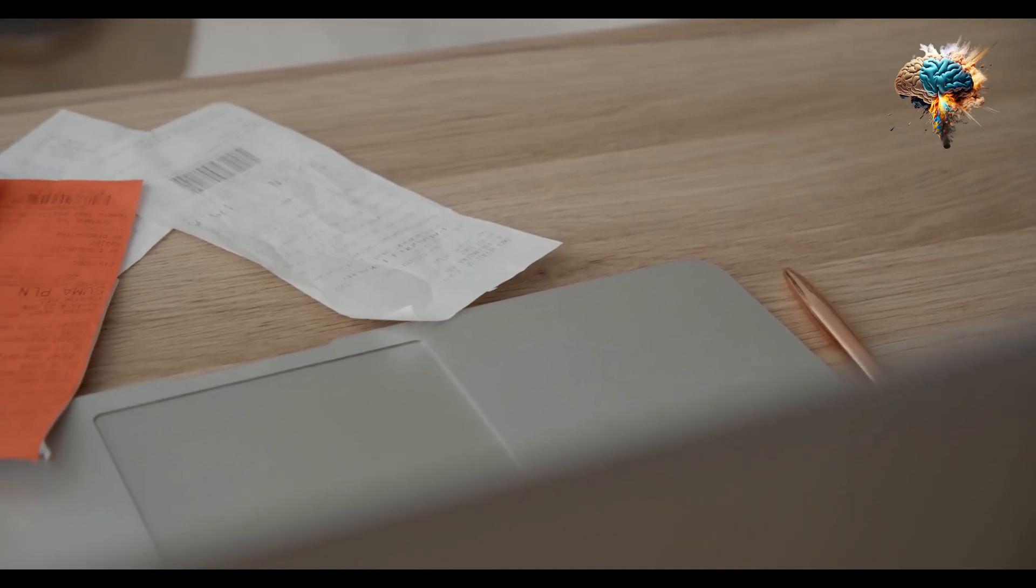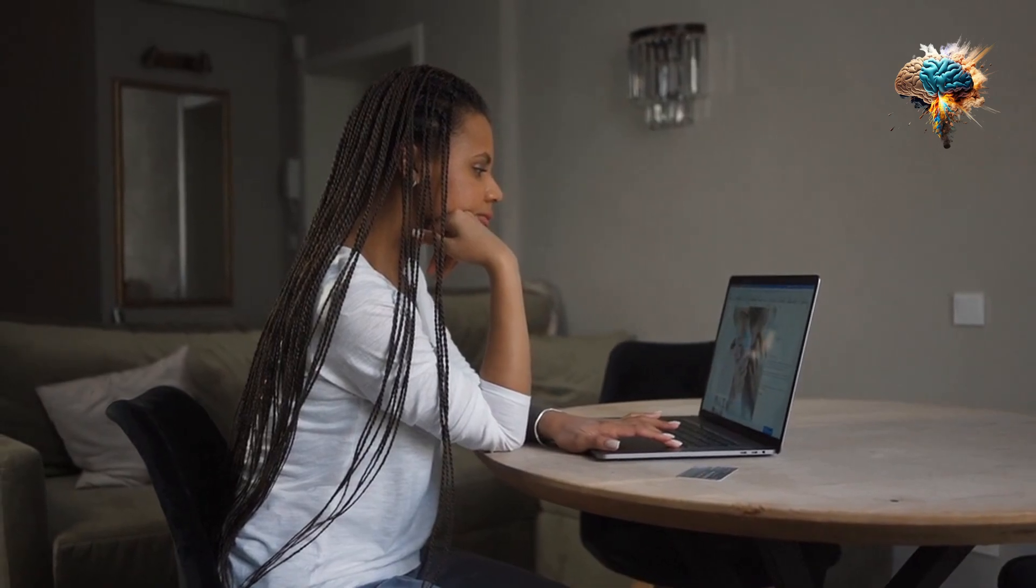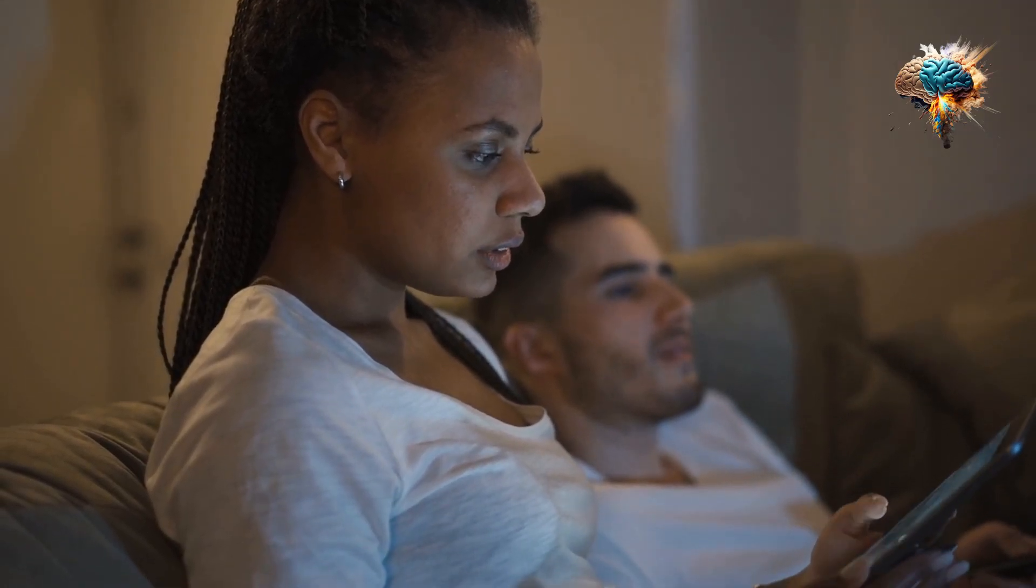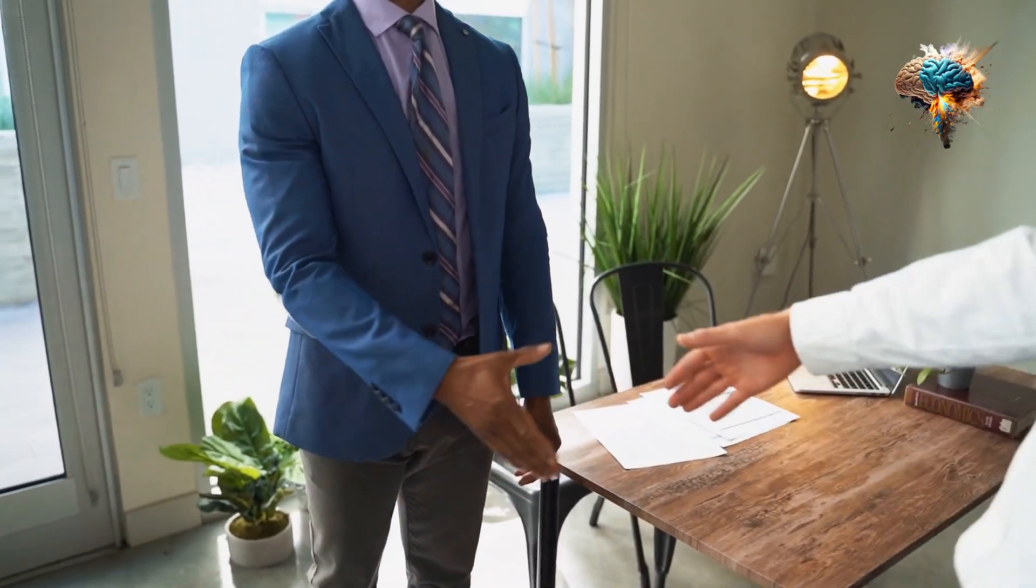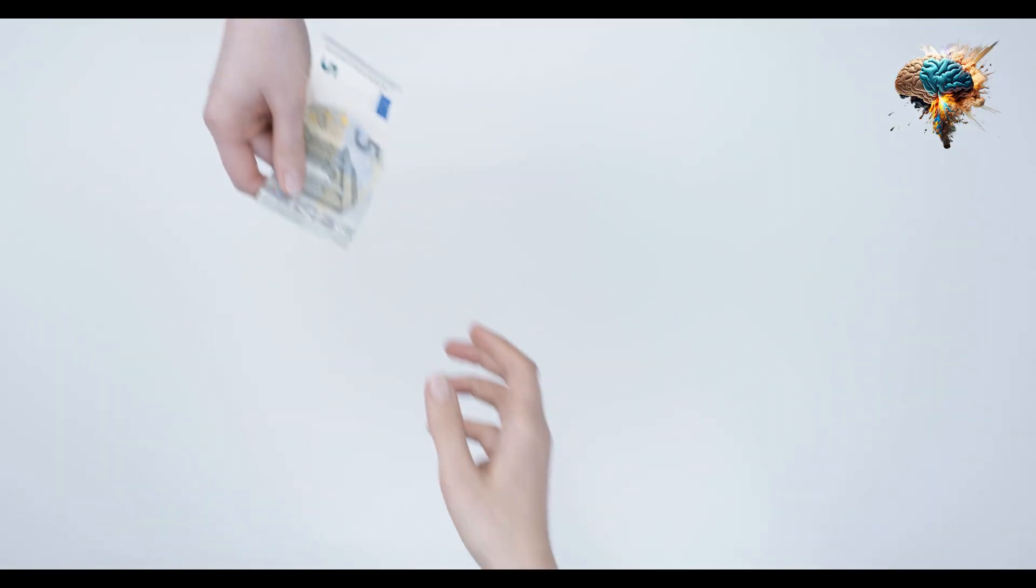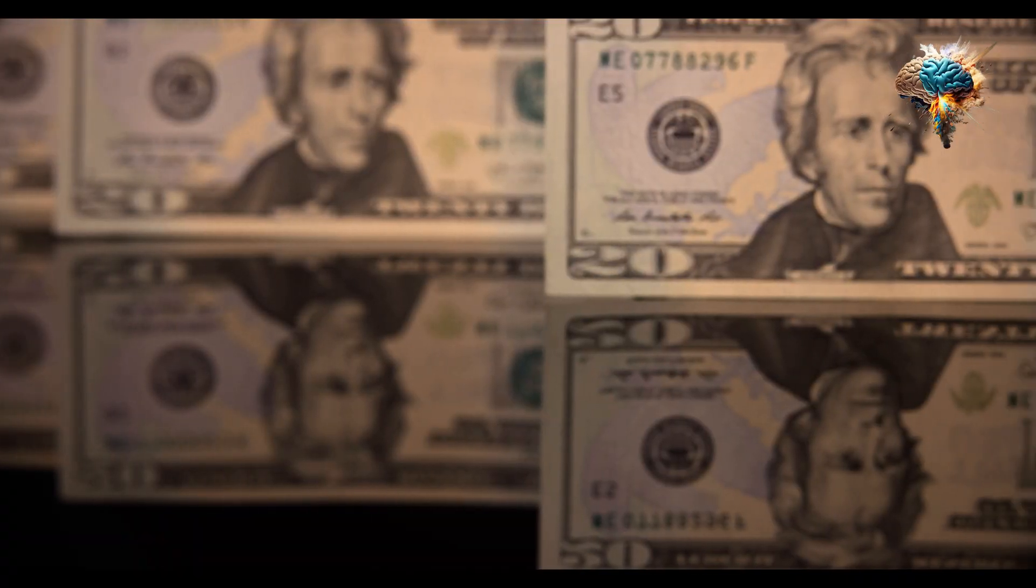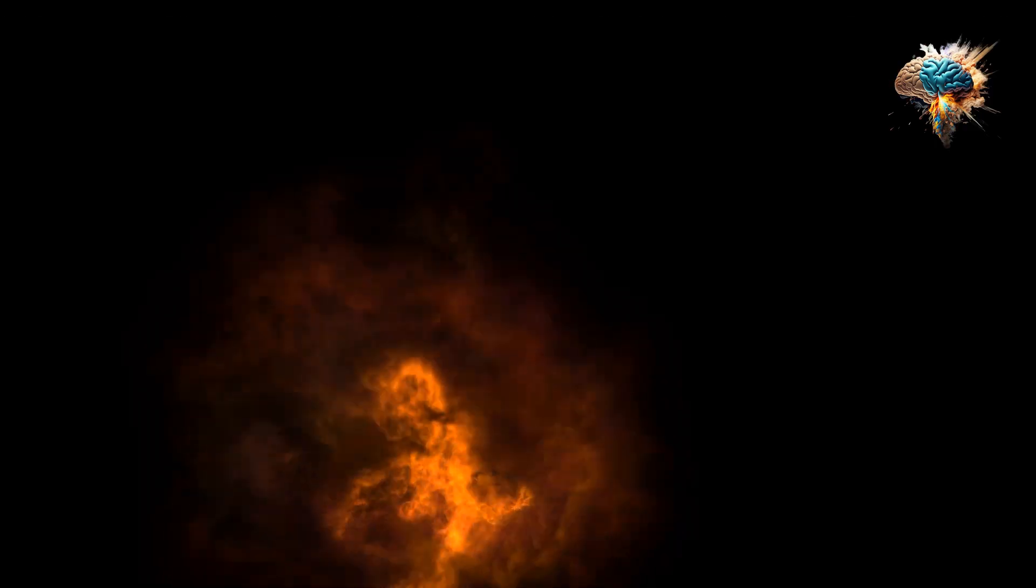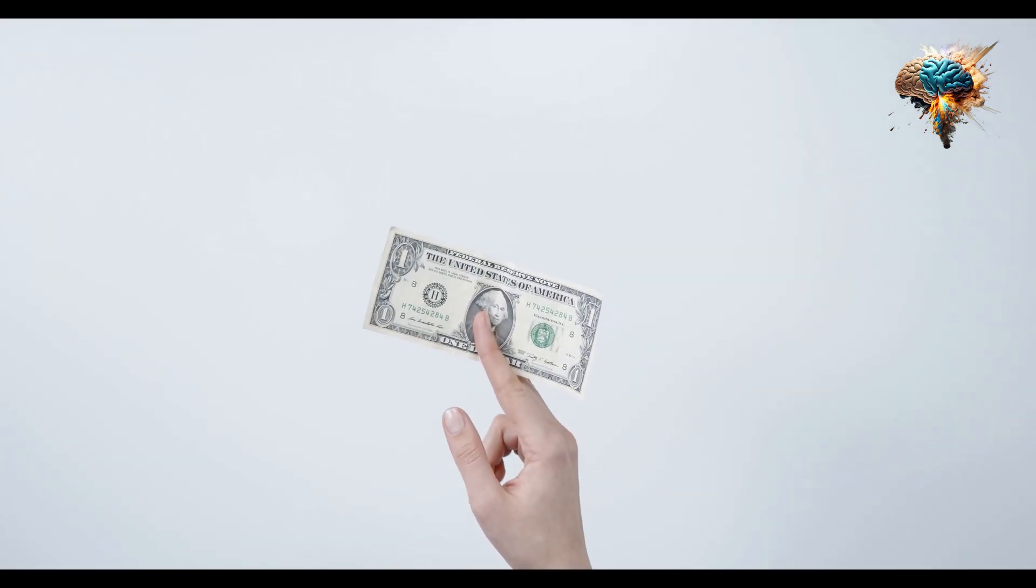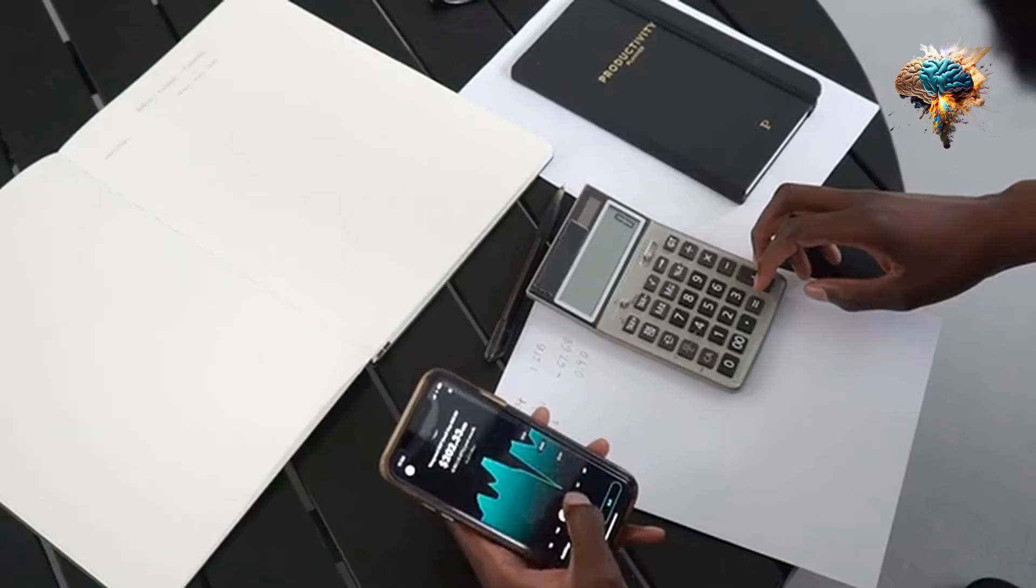Creating a budget is another essential step in expense management. Start by listing all your sources of income and categorizing your expenses into fixed and variable costs. Fixed costs include things like rent or mortgage payments, utilities, and insurance, while variable costs encompass groceries, transportation, and discretionary spending. Set realistic limits for each category and stick to them as much as possible. Remember, a budget is a flexible tool that can be adjusted as your financial circumstances change.